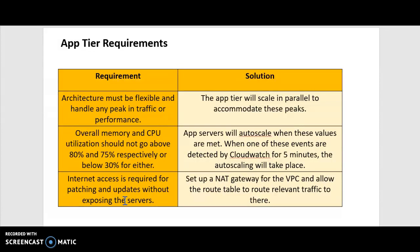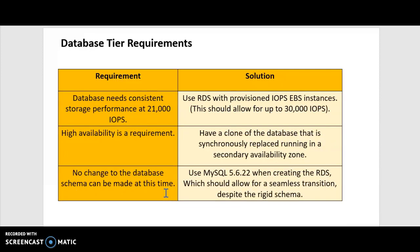For internet access, the internet access required for patching and updates without exposing the servers: I'd set up a NAT gateway for the VPC and allow the route table to route the relevant traffic there, so they can update without the servers becoming exposed.